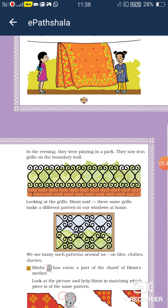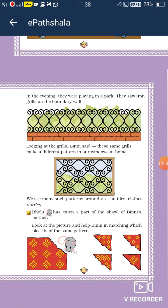Abhi dekho — Bholu the rat. Bholu ek chuha hai. Bholu rate ne Binny aur Ginny ki mummy ke shawl ka ek side se ek hissa kutar diya hai. Bacchon, abhi aap logon ko find out karna hai ki woh kaun sa kapda kutar hai. Yahan par shawl ka aadha hissa kuch cut ho chuka hai. Shawl ka pattern aap log dekh rahe ho ki woh diamond shape mein hai — chaar squares ko mila kar woh diamond shape mein rakha gaya hai. Abhi aap logon ko find out karna hai, bacchon — yahan par chaar aur designs diye gaye hain right-hand side ki taraf, unme se aap logon ko find out karna hai ki woh kaun sa hai.